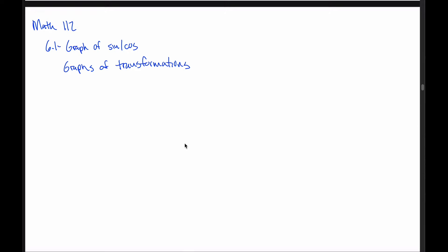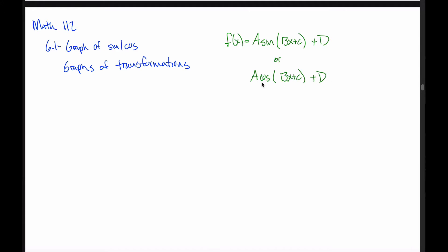For most students, function transformations is one of the more challenging topics. By the end of this section, I want you to be able to graph functions in the form y equals a times sine or cosine of bx plus c, plus d, where each of the numbers a, b, c, and d transforms the graph. The only difference between the sine and cosine versions is which base graph you start with.